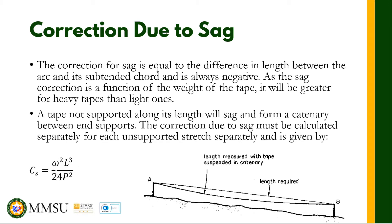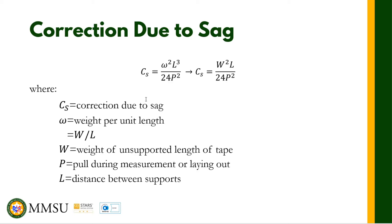The correction due to sag, CS, is given by: CS = ω²L³ / 24P². This formula is derived using the shape of the cable or tape — the shape of the tape is a catenary, and you will learn later on in your mechanics or statics subject that there are formulas for catenary involving integration. You will come up with this formula: CS = ω²L³ / 24P².